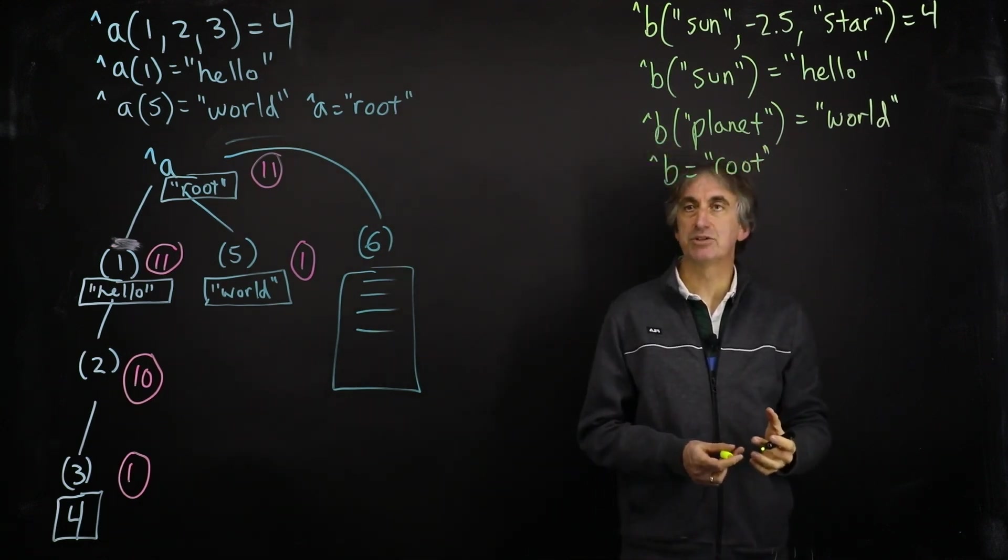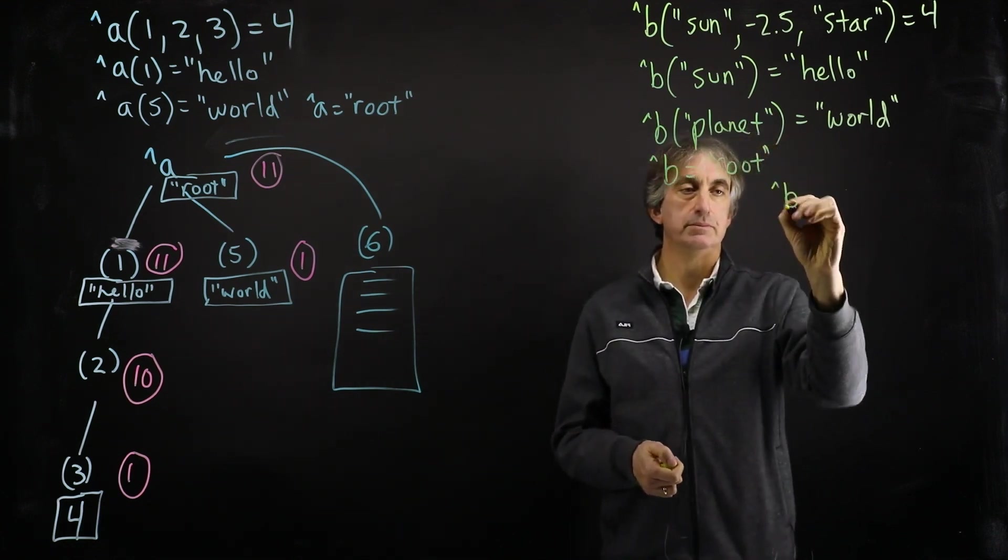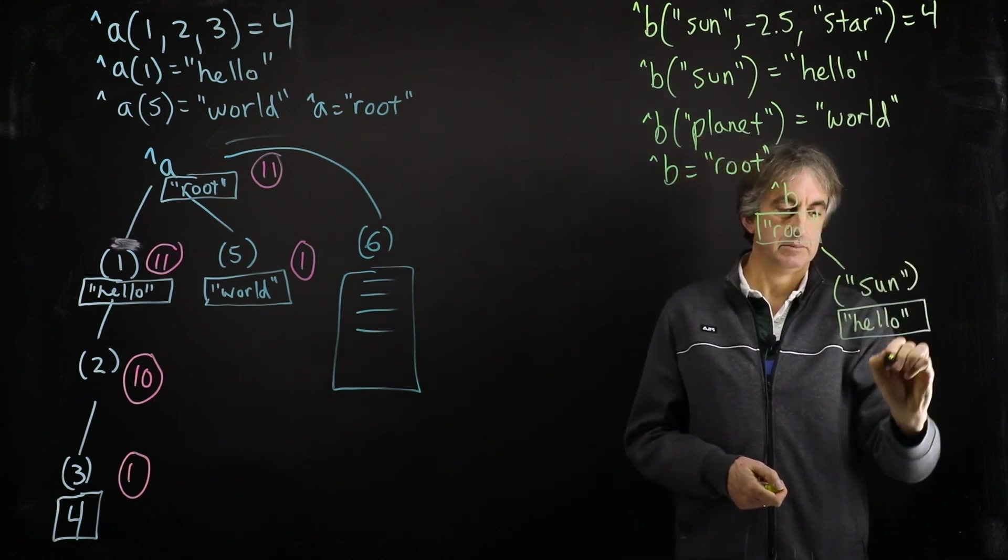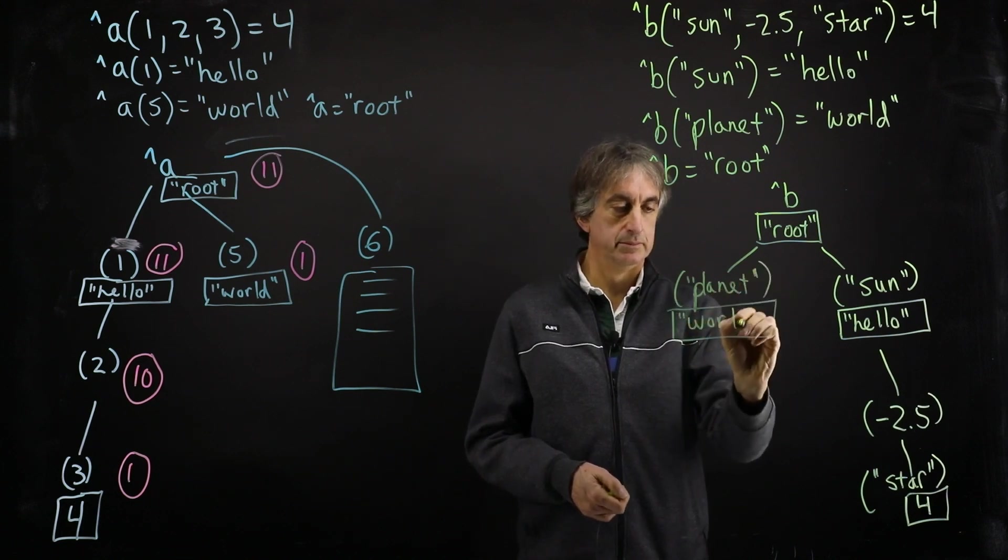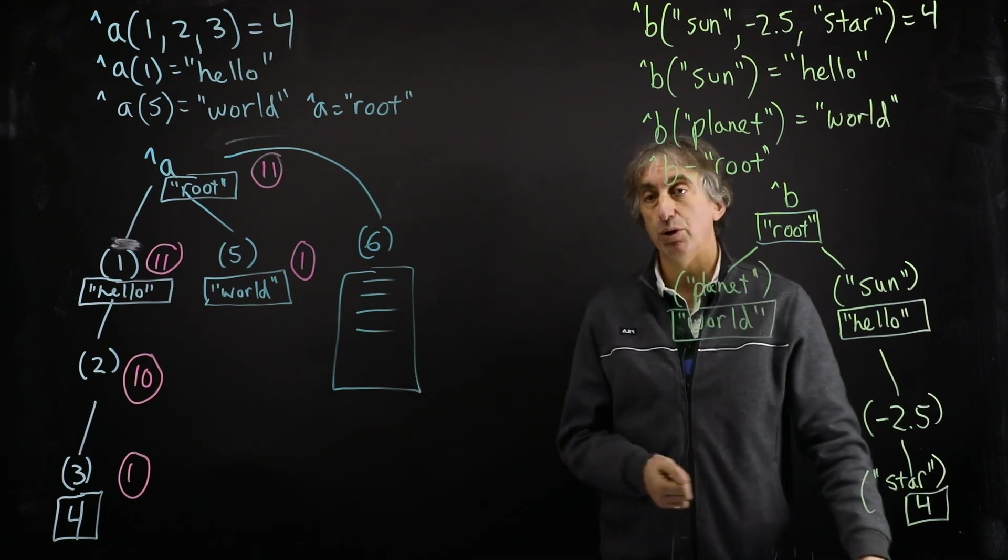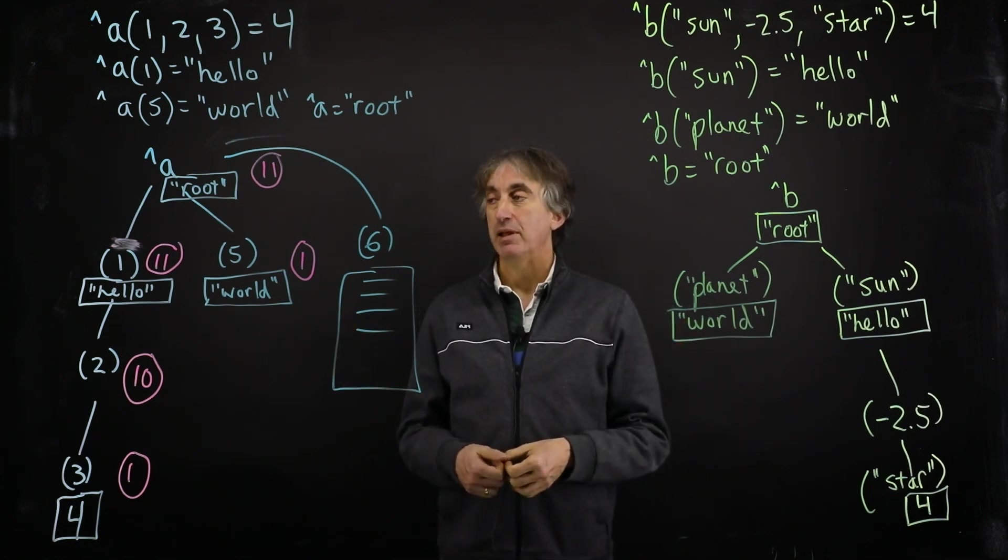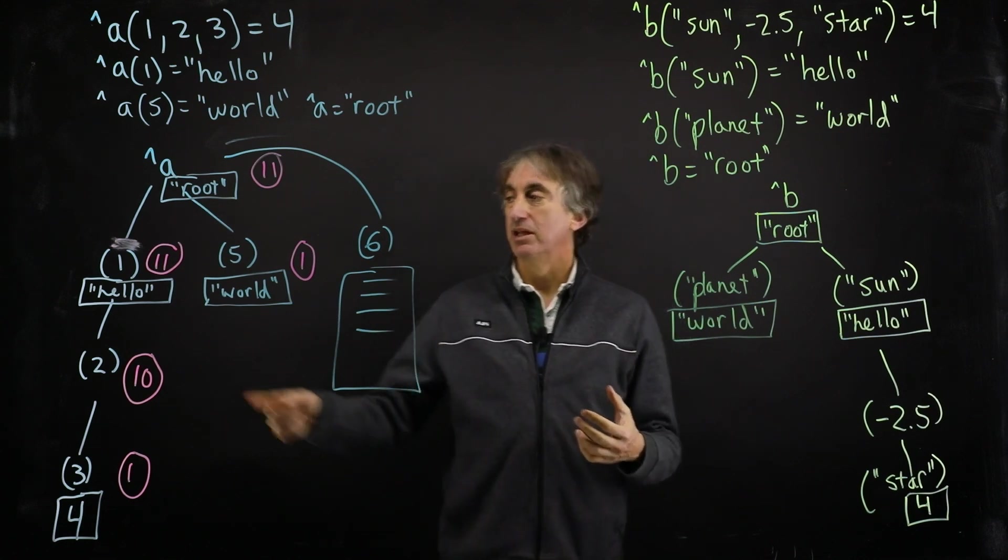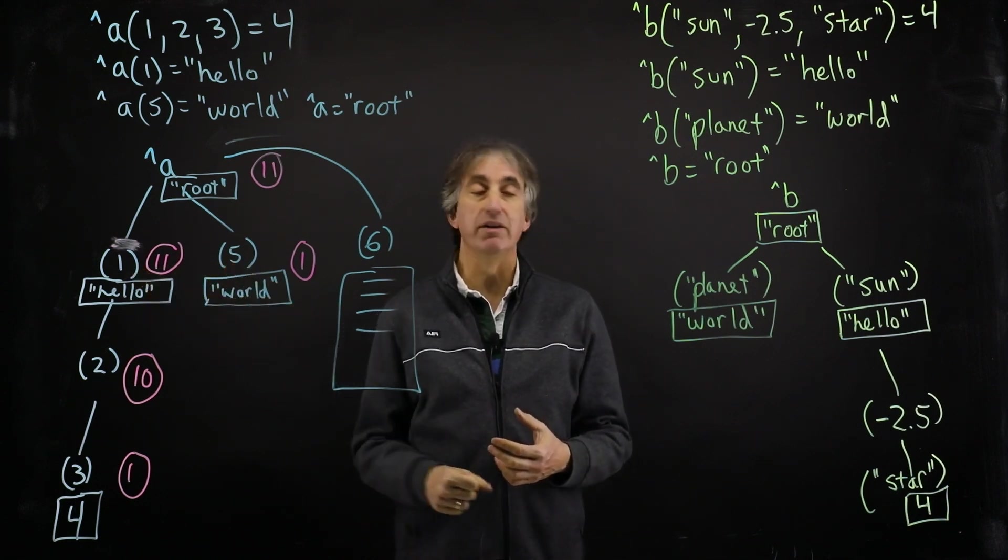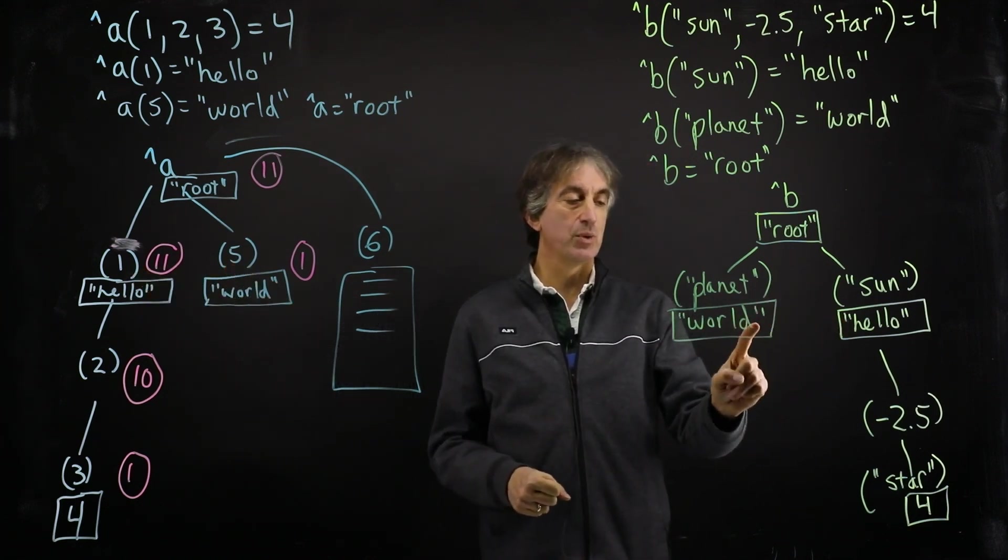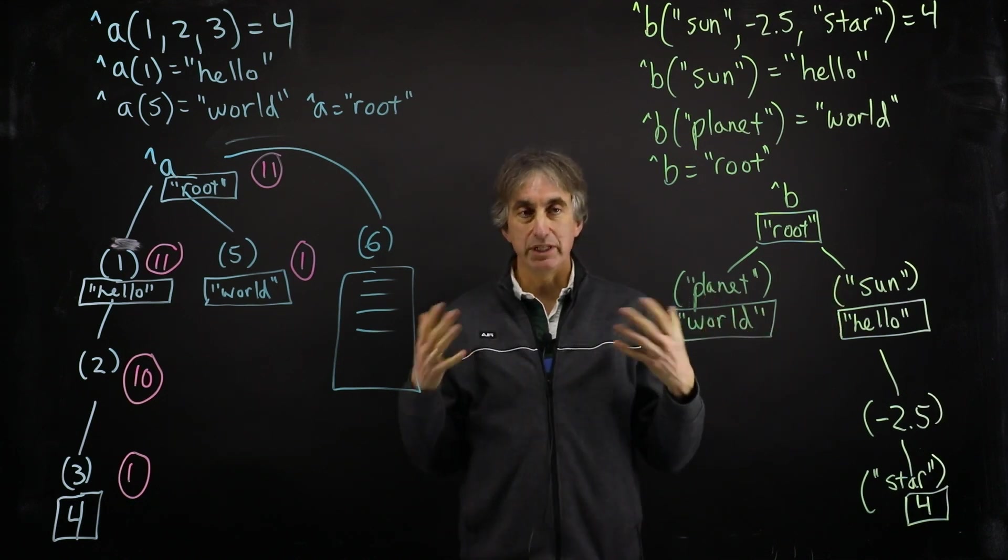And we'll give even the root a value. So again, this is the array syntax, but now I'm going to draw the tree for the B global. So if you look at the A global and the B global side by side, they're very similar. They're storing the same values. But the difference is that in this global, hello is to the left of world because one is less than five. But in this global, hello is to the right of world because sun comes after planet.